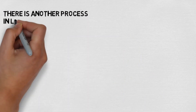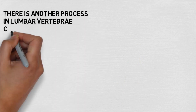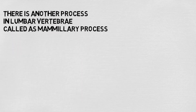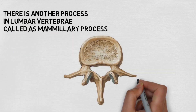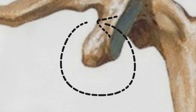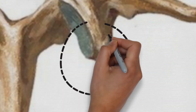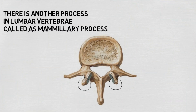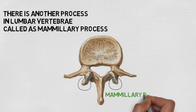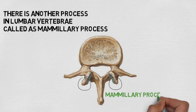We also have another process present in the lumbar vertebrae called the mammillary process. Let's see it. This pointed out process is the mammillary process of the lumbar vertebrae. It is very small and it is very difficult to distinguish.